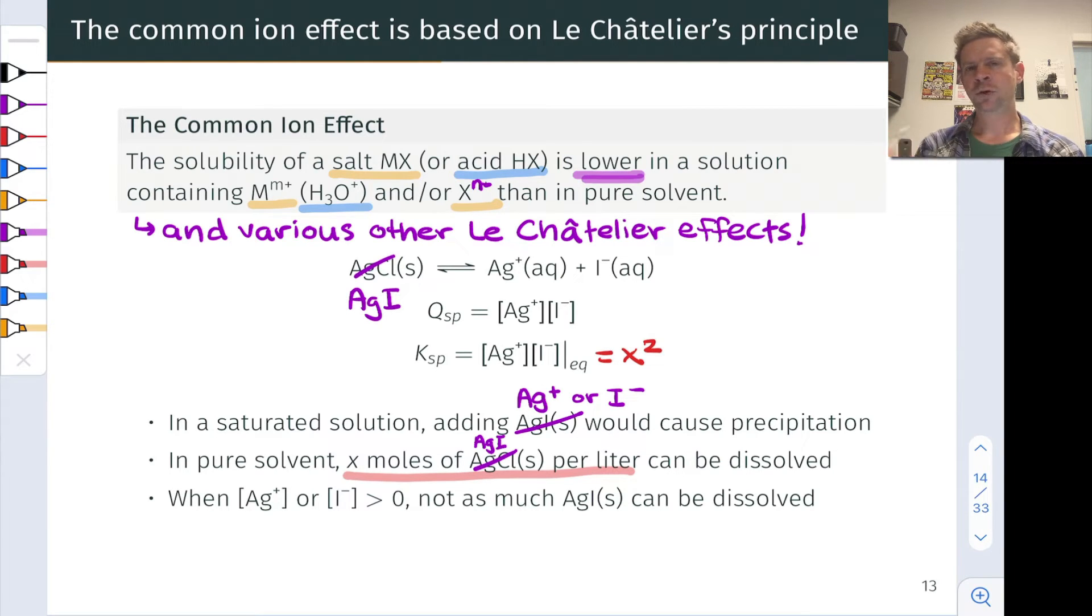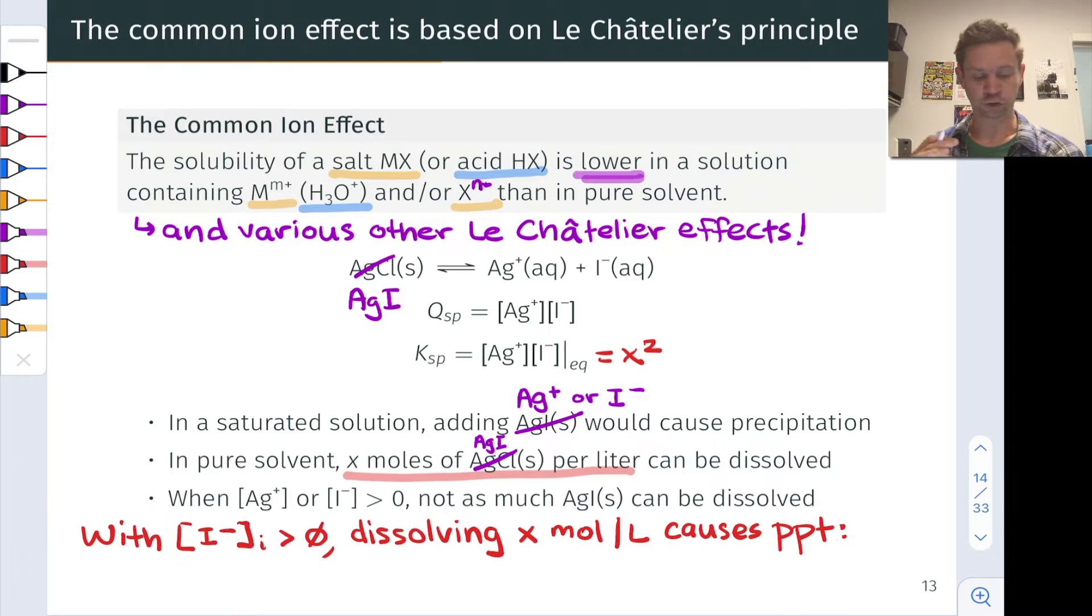But what happens if we don't dissolve the silver iodide in pure water, pure solvent, but start with a solution that has some silver cation or iodide anion dissolved in it already. In fact, not as much silver iodide solid can be dissolved in the solution. And we can prove that very easily using ideas we've laid out already here. So let's imagine that we started with a solution in which the iodide concentration was already greater than zero. Maybe we've got a solution of sodium iodide in water at some concentration. It's very easy to show that dissolving x moles per liter of silver iodide in that solution would cause precipitation of silver iodide. In other words, not all of it would dissolve. And this implies that the molar solubility is lower than x as a result of the initial iodide present in the solution from the start.